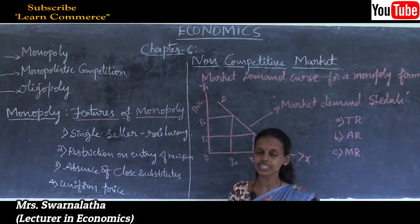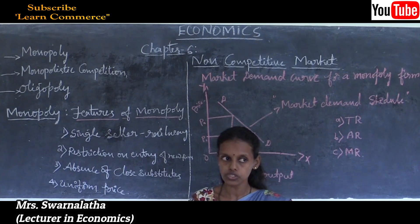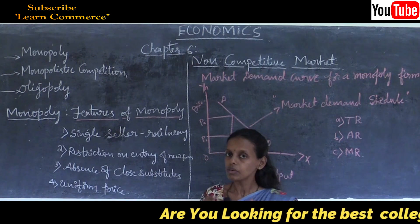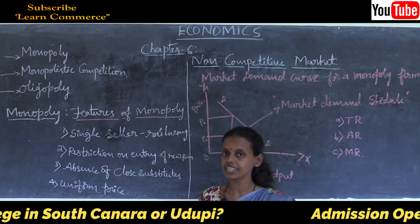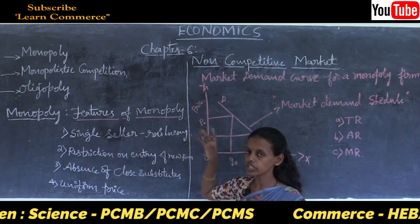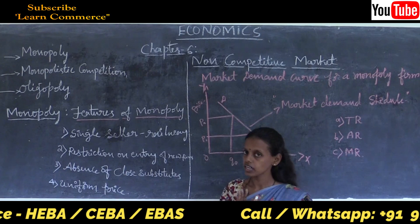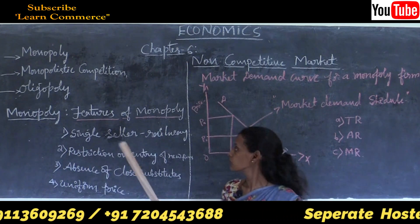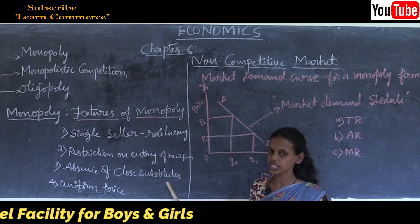Absence of close substitute is another feature of monopoly. Under perfectly competitive markets, firms produce homogeneous or identical goods and there are close substitutes. But under monopoly there is no close substitute. Indian Railway is again the best example - there is no other Indian Railway authority. Only the Indian Railway department controls the entire railway system across India, so there is no close substitute for that service.